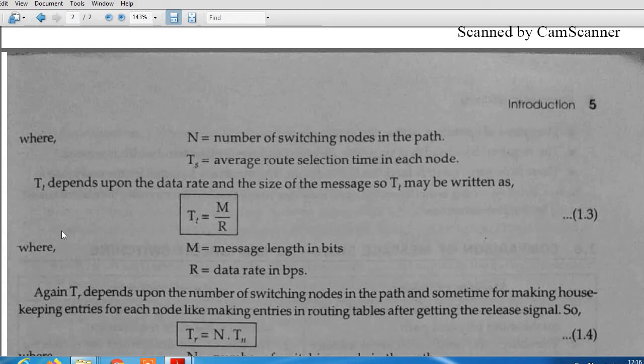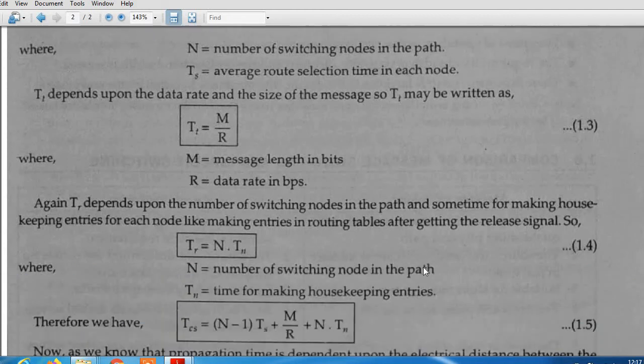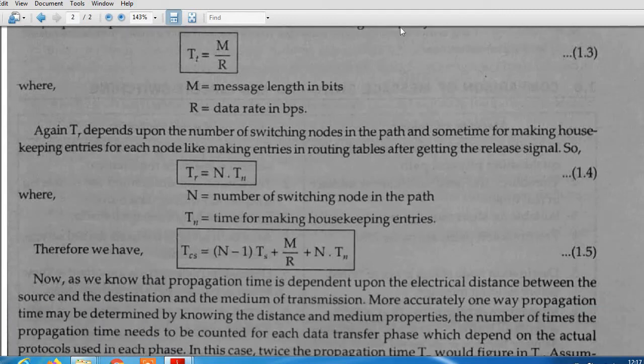Tt is the time taken for data transmission. It depends upon M and R, where M is the message length and R is the data transfer rate. By doing this calculation we can easily find Tt. Tr is the releasing time. Tr also depends on the switching node and the time for making housekeeping entries. That time multiplied by the number of nodes gives us Tr.